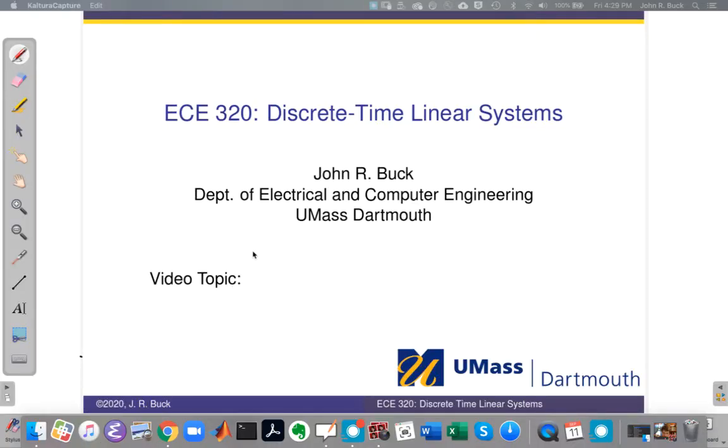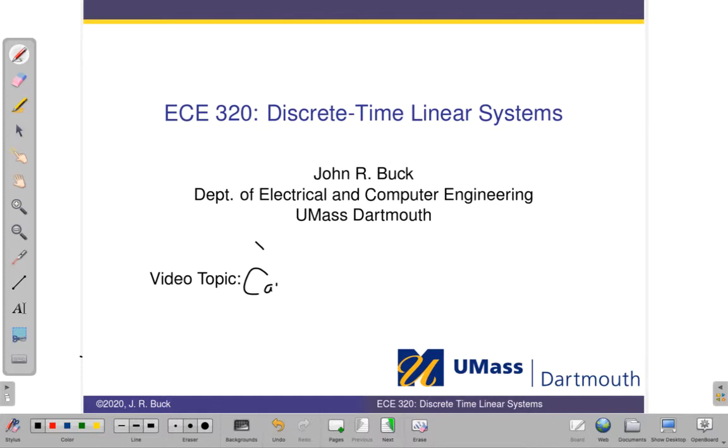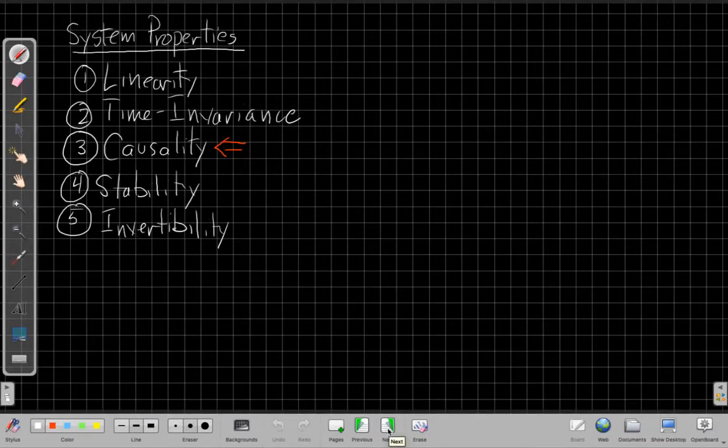Switching over to our whiteboard here. The topic for today is causality. This is part of the series we're talking about five important properties for systems: linearity, time invariance, causality, stability, and invertibility. Causality is the focus of this video. There are other videos for the first four. I haven't made a video for invertibility yet, but we don't talk about it too much in this class. There's videos for the first four properties here.